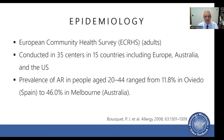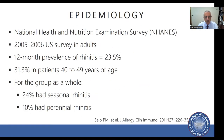The European Community Health Survey was conducted in 35 centers in 15 countries, including countries from Europe, Australia, and the United States. The prevalence of allergic rhinitis in people aged 20 to 44 ranged from 11.8 percent in Oviedo, Spain, to 46 percent in Melbourne, Australia — clearly a wide range of prevalences across the globe.